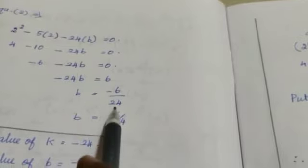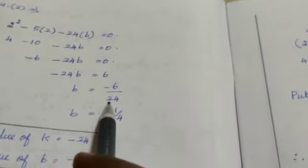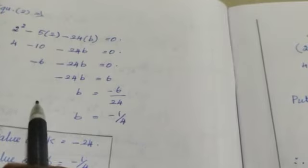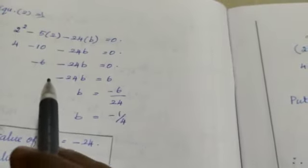b equal to minus 6 by 24 that is equal to minus 1 by 4 while you are simplifying this fraction by 6. Therefore, while the point q is on the equation, the value of b equal to minus 1 by 4.